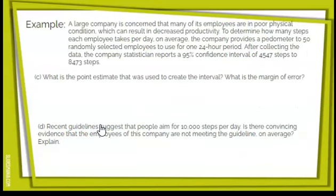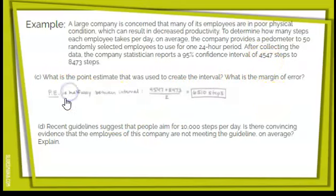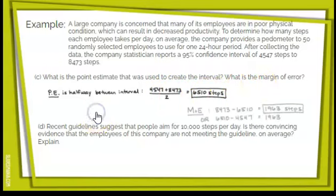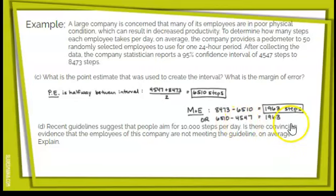Part C: what's the point estimate used to create the interval, and what's the margin of error? The point estimate is the center of the interval — it's halfway between the two ends. Take 4,547 and 8,473, add them up, and divide by 2. Right in the middle is 6,510 — that is the point estimate. To find the margin of error, take the maximum minus the point estimate: 8,473 minus 6,510 equals 1,963. Or take the point estimate minus the minimum and get the same number. Either way it should be the same, because we add and subtract the same value.